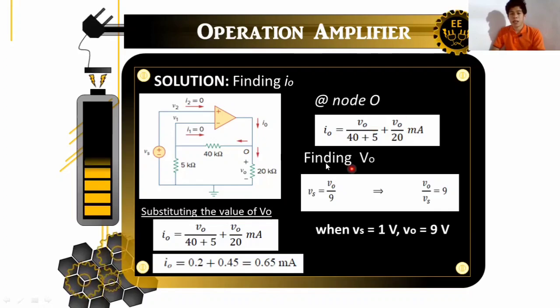So, we need to substitute the value of V sub O. So, again, we use the voltage here in terms of V sub O. Okay. Not V sub 1. So, the voltage in terms of V sub O. Okay. So, V sub O is equals again. So, our V sub O over V sub S, and getting V sub O when V sub S is equals to 1. So, multiply and we will get V sub O is equals to 9 volts. We have the value of our V sub O.